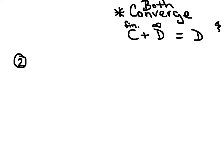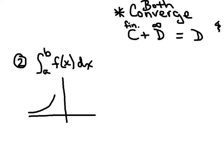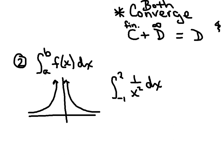One last note: there are actually two types of improper integrals. The second type is where we have finite endpoints, but f(x) happens to be discontinuous at some point within the interval a to b — for instance, the graph of 1 over x squared, asymptotic at x equals 0, if we integrate from negative 1 to 2. Both bounds are finite, but there's an infinite discontinuity on the interior, and that's the type we'll look at in tomorrow's lesson.